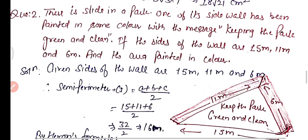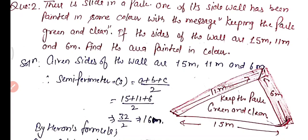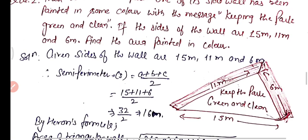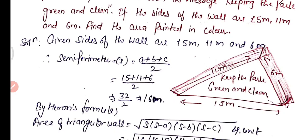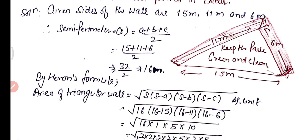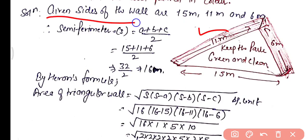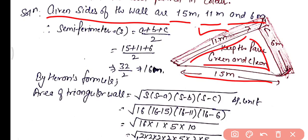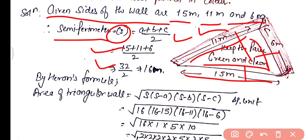The second practice question: there is a slide in a park. One of its side walls has been painted in some color, keeping the park green and clean. The sides of the wall are 15 m, 11 m, and 6 m. Find the area painted in that color. As you can see on the screen, these are the dimensions of the triangular slide wall. Semi-perimeter s = (15 + 11 + 6) / 2 = 32 / 2 = 16 m.